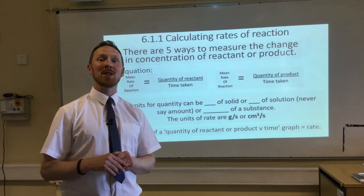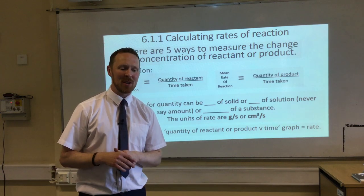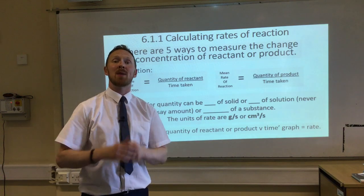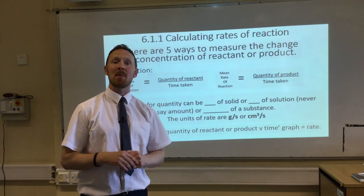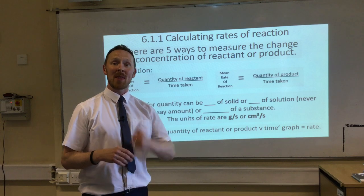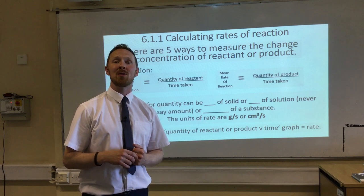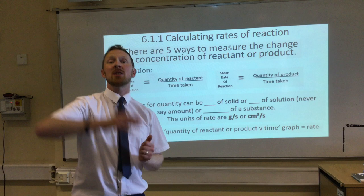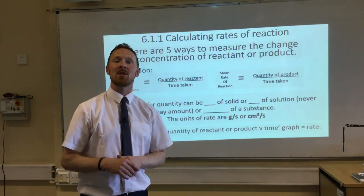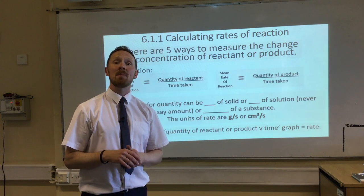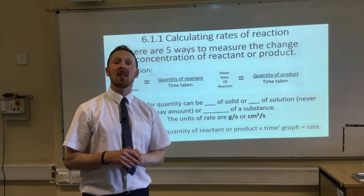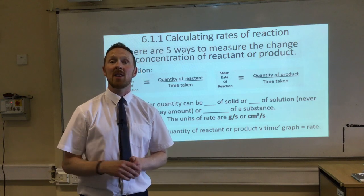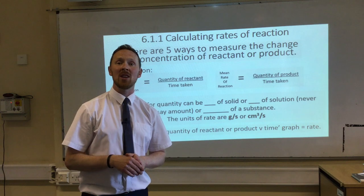You've done loads of experiments about rate of reaction. You've done experiments where the mass has decreased, maybe with marble chips reacting with acid, and the mass has gone down because carbon dioxide has been given off. That's one way of measuring the rate of reaction. Another one is you've measured the volume of gas given off when magnesium reacted with acid. You've measured the temperature change in an exothermic or endothermic reaction, and you've known when it's finished because the temperature has stopped changing.